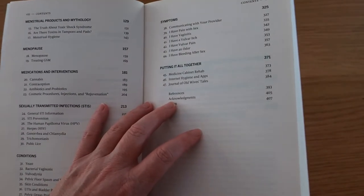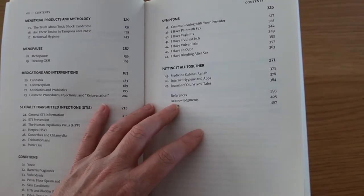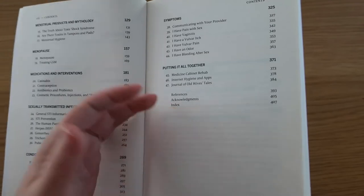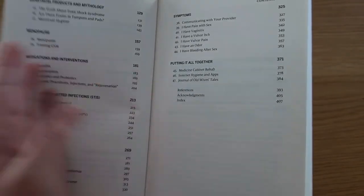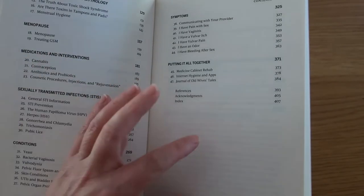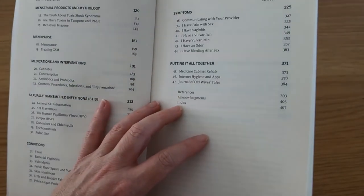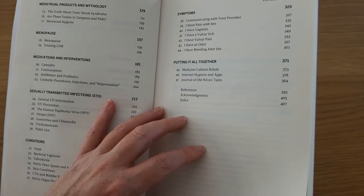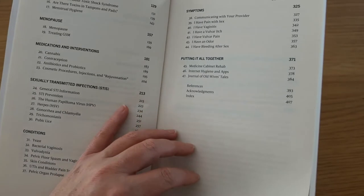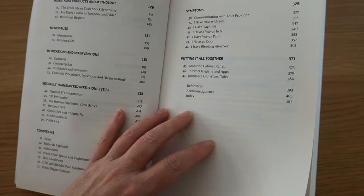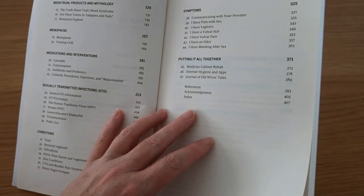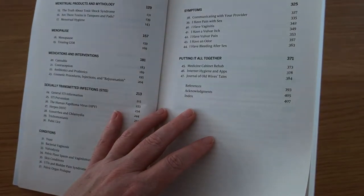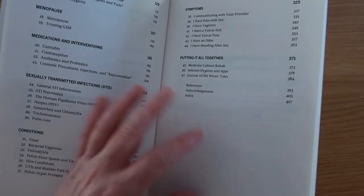We then come to vulva symptoms such as pain during sex, vulva itching, odors, and conditions related to sex such as pain or bleeding after sex. So whereas the first section deals with the biology and essentially a sex ed lesson, this is more the advanced sex ed and what happens when you hit problems you don't know about. The last section is Putting It All Together, which is an overview and sum up of internet medicine cabinet rehab, internet hygiene and apps, and journal of old wives tales. So she addresses more of the mythology surrounding the vagina and vulva.